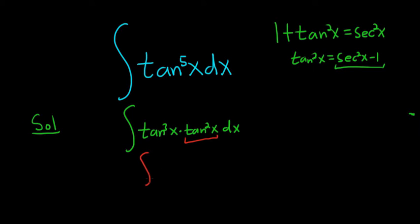So this is equal to the integral of tangent cubed of x. And then tangent squared is secant squared x. Then we have the minus 1 here and then dx. All right. So what do we do next? Well, maybe just distribute and see what happens.